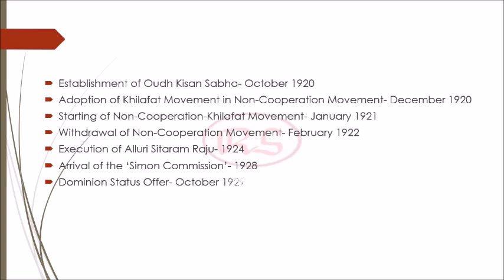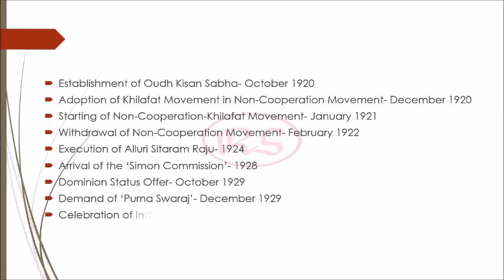Then in December 1929, Congress formulated the demand of Poorna Swaraj — complete independence. They declared that they no longer wanted Dominion Status but wanted complete independence. This was done in the Lahore Congress Session, and in the same session it was decided that 26th January 1930 would be celebrated as Independence Day, on which every individual would take a pledge for India's independence. However, Gandhi ji observed this attracted very little attention.